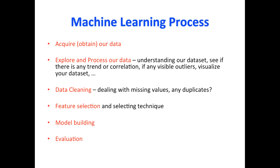Now let's look at the machine learning process. These are some of the techniques that we apply in any machine learning algorithm. The first step is acquiring or obtaining our data. Once we obtain our data, we explore and process it — this involves understanding our data set, seeing if there is any trend or correlation, and checking for visible outliers by visualizing our data set. After that, we have data cleaning, where we see if there are any missing values or duplicates and remove them.